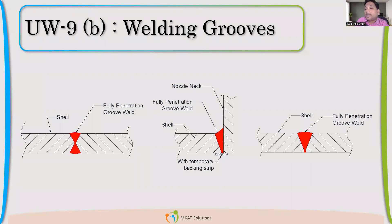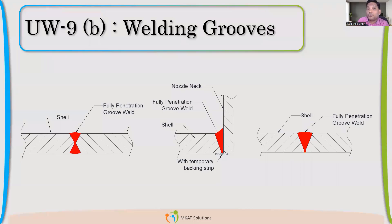The code clearly leaves it to the fabricator to select the angle, root gap, and root face. You can have any kind of welds, but you have to do qualification. You have to qualify that weld beforehand before welding on the job — that is very, very important. The qualification process is required based on UW-28. How to qualify a weld is given in UW-28, and we have to follow that. Make sure that it is full penetration. Other than that, there is no additional requirement, suggestions, recommendations, or restrictions for welding grooves.